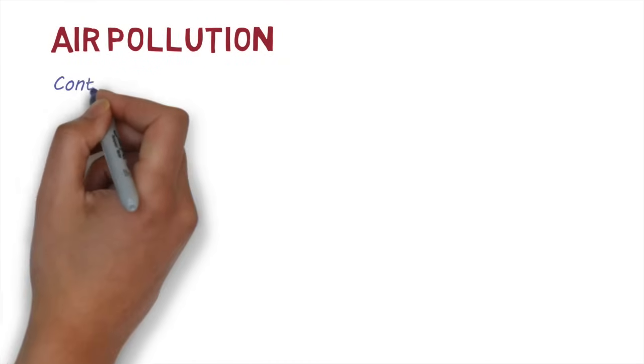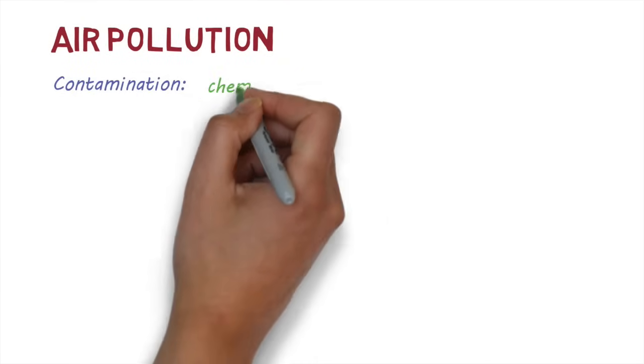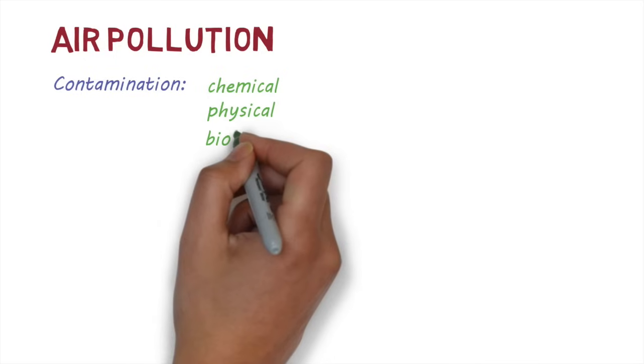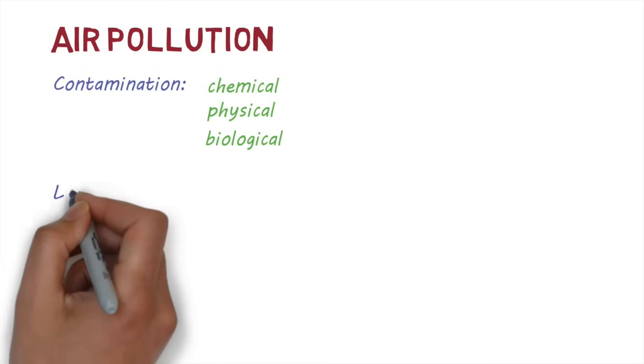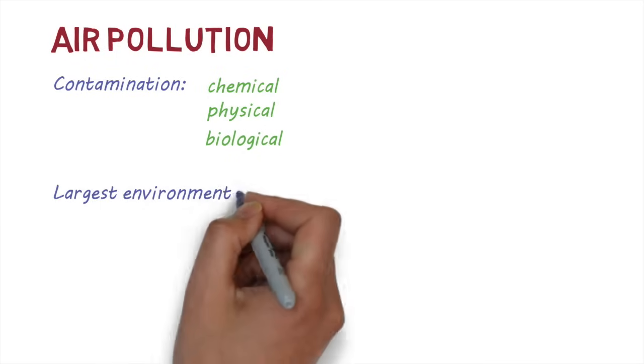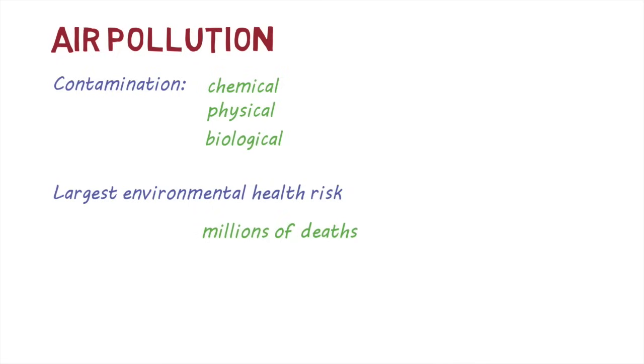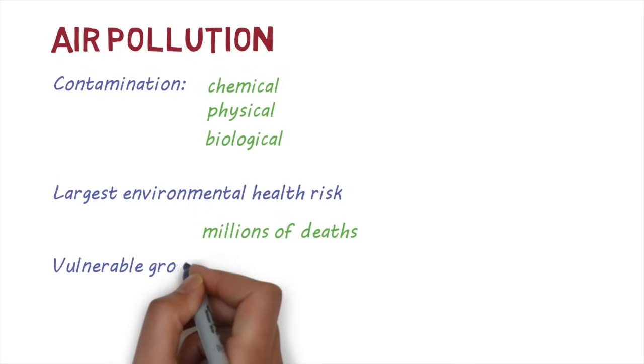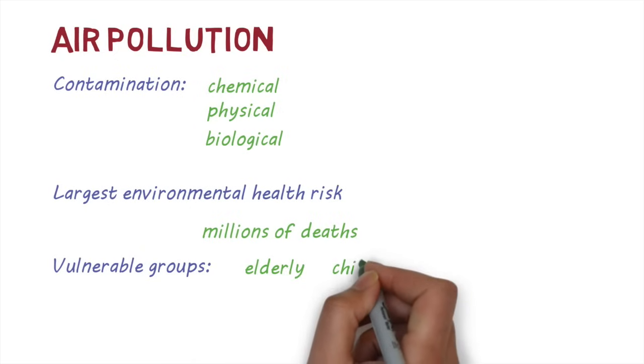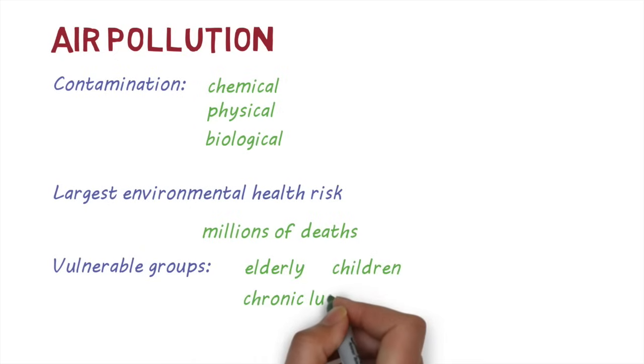Air pollution occurs when the air is contaminated with any chemical, physical or biological agent. It is the world's largest environmental health risk, leading to millions of deaths around the world each year. Although anyone can be affected by air pollution, people who are most vulnerable include the elderly, children and people with chronic lung or heart disease.